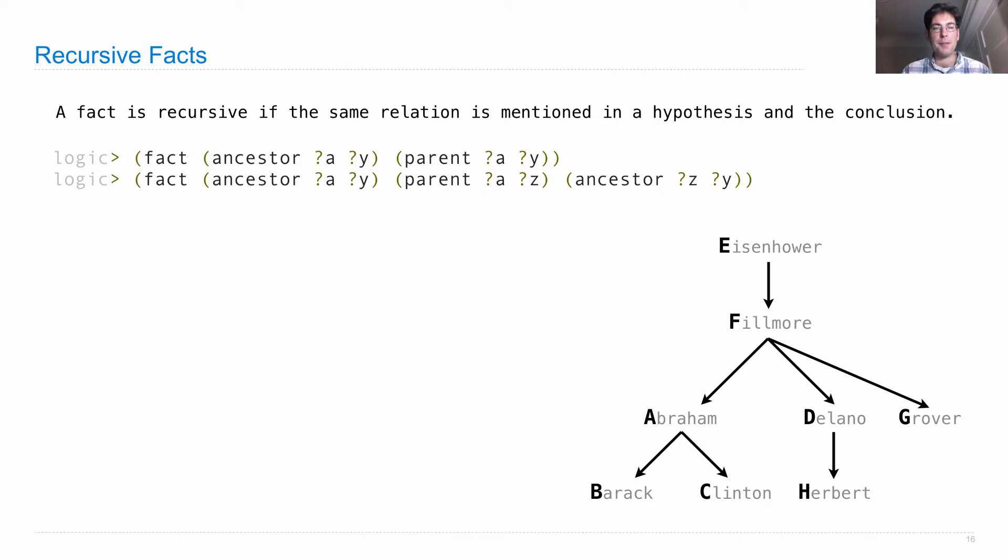Well, let's look at an example. There's an ancestor relation between Eisenhower and Barack if there's a parent relation between Eisenhower and Fillmore and an ancestor relation between Fillmore and Barack.